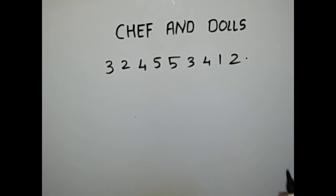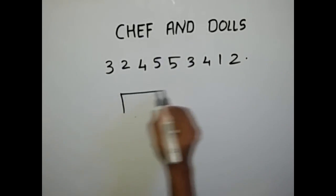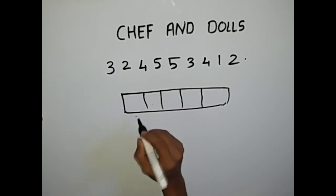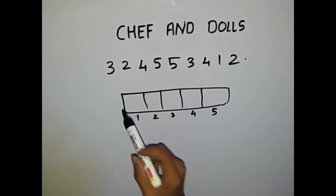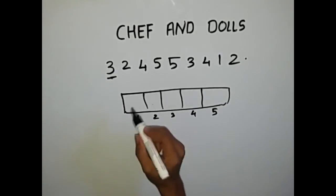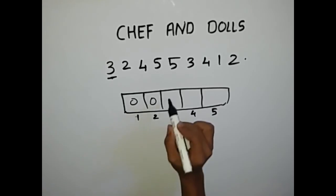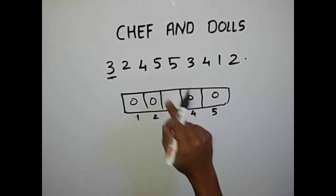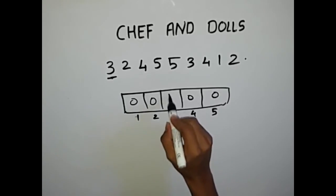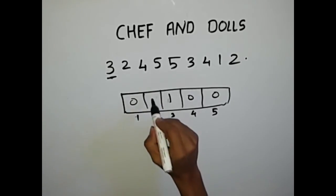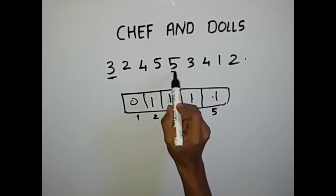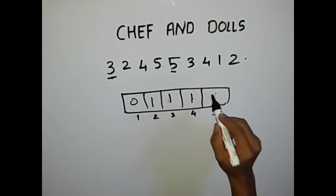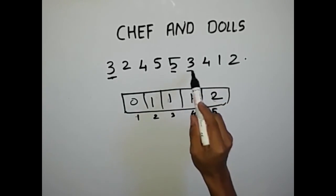Let's take another example. Chef has dolls represented by these numbers. We take an array representing doll numbers one, two, three, four, five — initialize each element with zero. The first input is three, so increment the third column to one. Next input is two — becomes one. Next input is four — four becomes one. Next input is five — becomes one. Again input is five — one becomes two. Next input is three — this again becomes two.